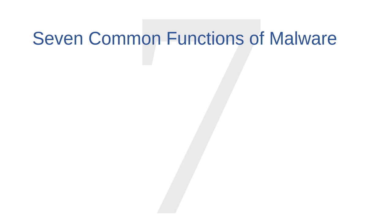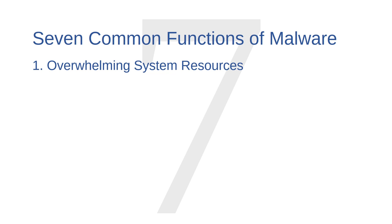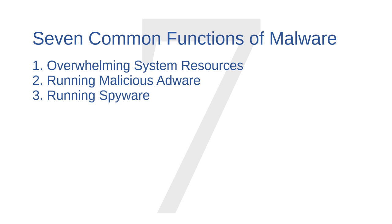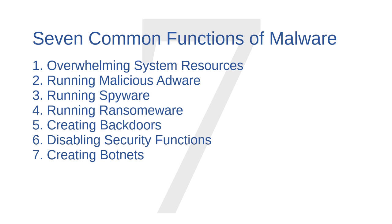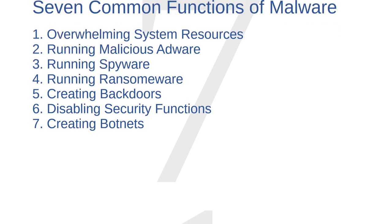These seven functions are: Overwhelming System Resources, Running Malicious Adware, Running Spyware, Running Ransomware, Creating Backdoors, Disabling Security Functions, and Creating Botnets.